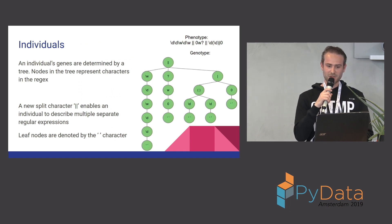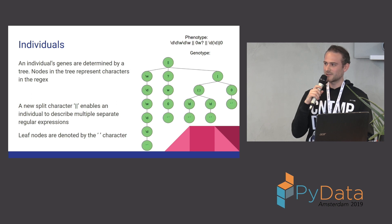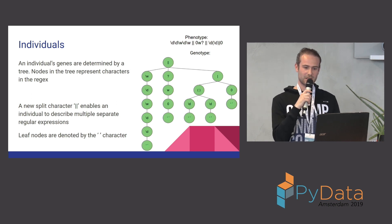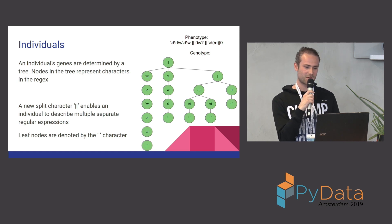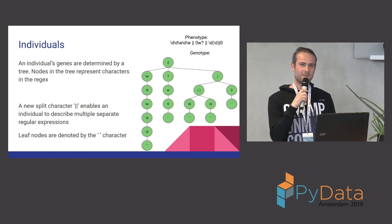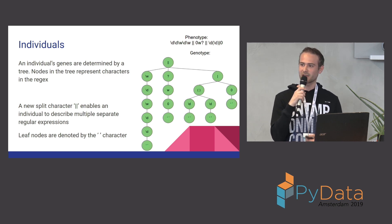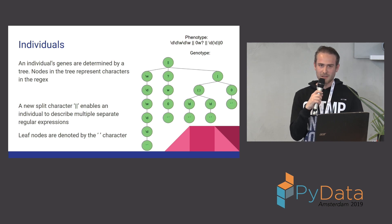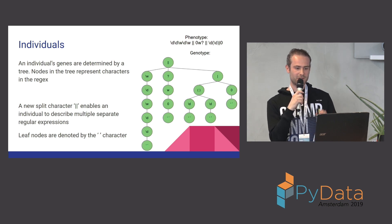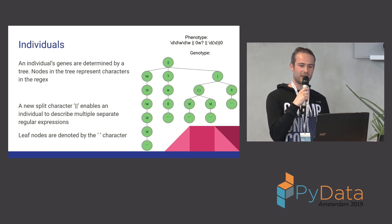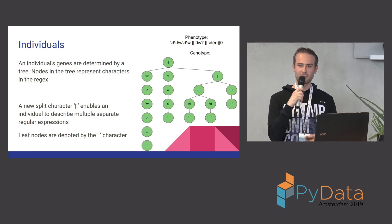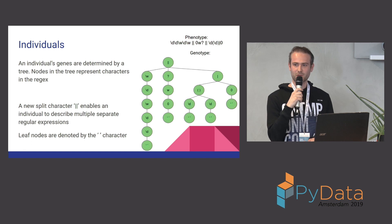An individual gives us a set of regular expressions. An individual has a phenotype and a genotype, with the genotype determining the phenotype, and the phenotype actually being the regular expressions. The genes are given by a tree with a node in the tree representing a character in the regular expression. We introduce a special split character — the two pipes — that enable one individual to describe multiple separate regexes in a single tree.